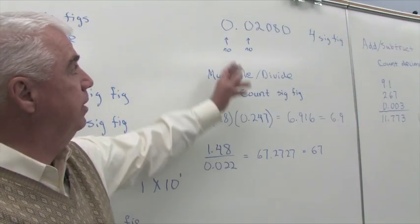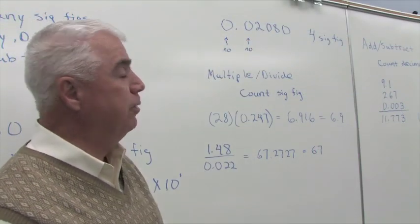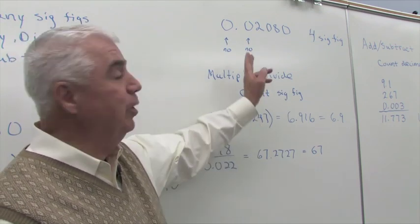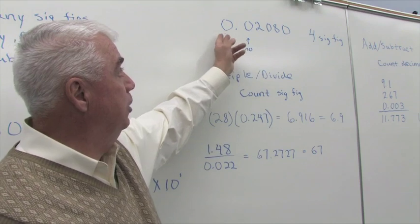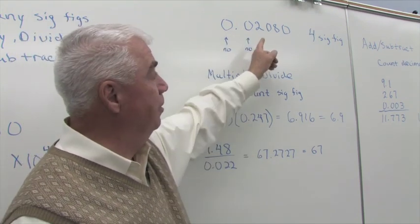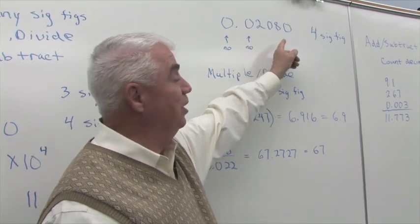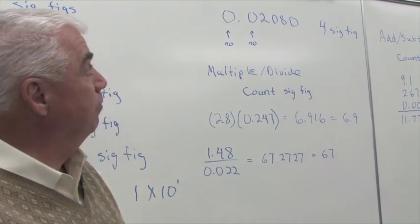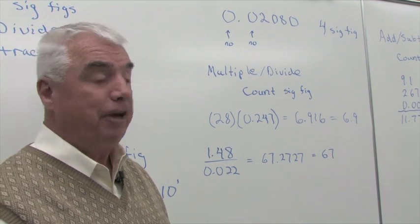Just to review, if we had this number, 0.02080, we threw in lots of zeros. Because the two leading zeros are not significant, the middle zero is, and the trailing zero is significant. So we have a total of four significant figures.